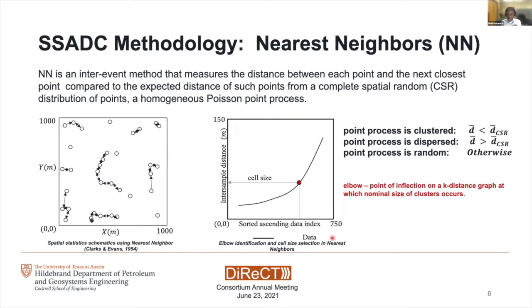Moving on to Ripley's K, here Ripley's K utilizes the number of samples within a defined radius of an event. You count it and compare it to the expectation from complete spatial random over a given radii to check if the point pattern is clustered or dispersed. Then we calculate the confidence interval at a significance level of 95% of the Ripley function and apply a bootstrap to the data for different sets of realizations. The point at which the data is significantly clustered — that is, it crosses the upper confidence boundary and is above the CSR line — we call that a crossover point. That is, the maximum departure from CSR over the simulated upper confidence boundary at 95% significance level. When you trace that point down to your radius, it becomes an input for the cell size selection.